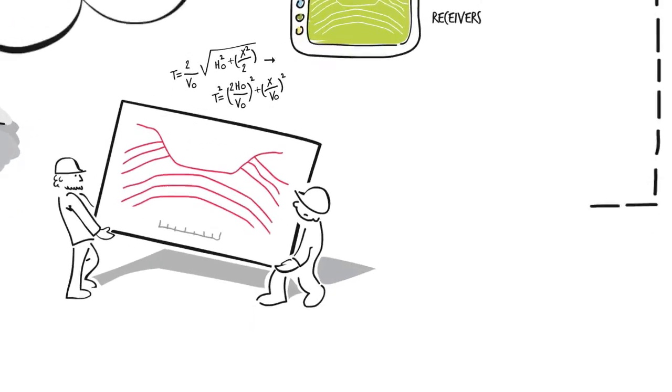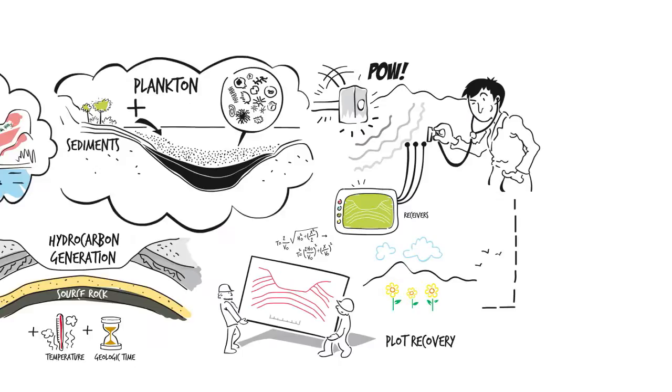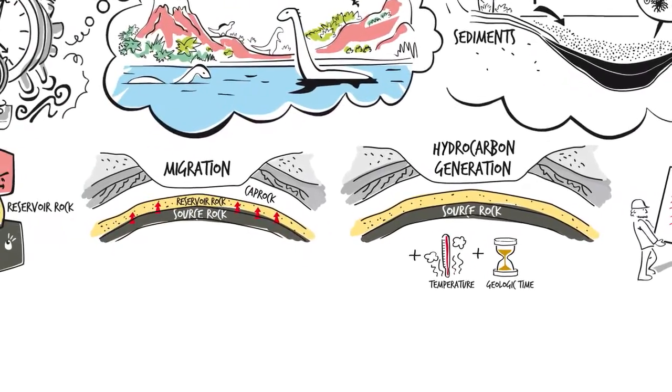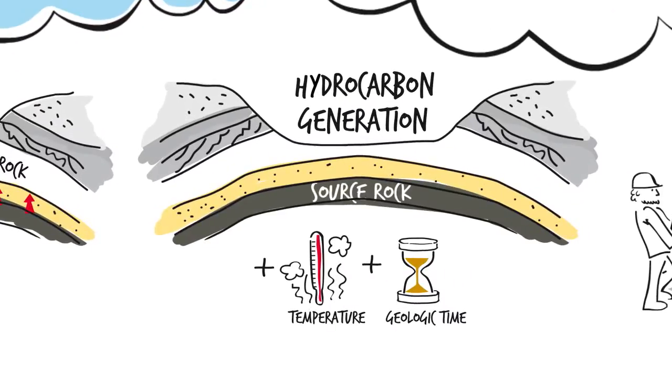Once these tasks are completed, the land is restored to its original condition. An exploratory well may be drilled in those areas where the geoscientists have predicted that the five key elements and processes converge.